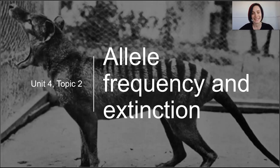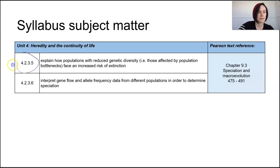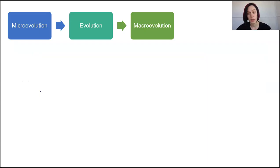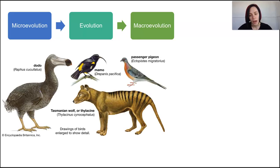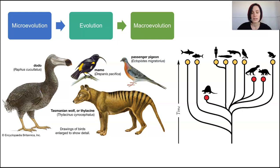In this last lesson we're looking at allele frequency and extinction. We've learned about the full gamut of evolution — from the changing of allele frequencies in a population due to selection pressures, seen in microevolution, to the ways new species arise from an isolated gene pool and the broader patterns species follow when adapting to their ever-changing environment. But when an environment changes so much that the habitat becomes unsuitable, entire populations can die out and leave no direct descendants. This is known as extinction.